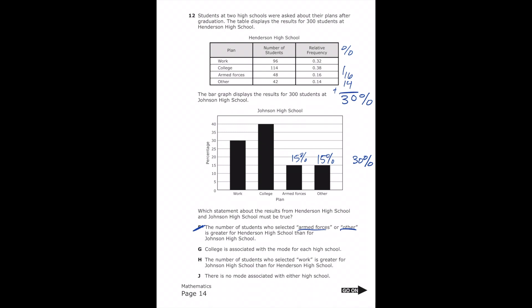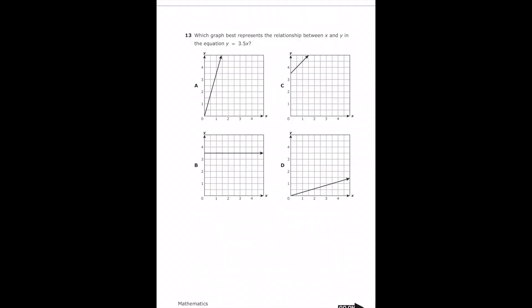Letter G says college is associated with the mode for each high school — meaning it appears most often. For Henderson, college is 0.38 or 38%, which is the highest percentage. For Johnson, college is 40%, which is also the highest. So the correct answer is letter G.